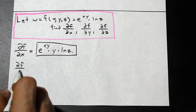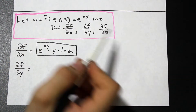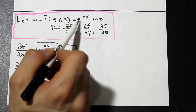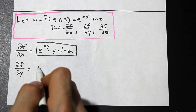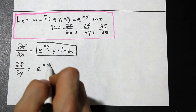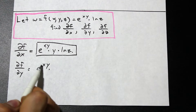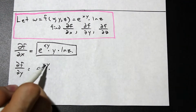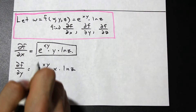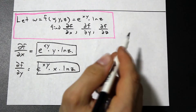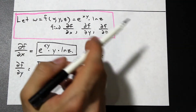Now let's do df/dy. We do exactly the same thing — the only thing that changes is when we apply the chain rule to e to the xy. The derivative of e to the xy is e to the xy times the derivative of xy with respect to y, which is x — y becomes 1 and we're left with x. Then ln(z) is constant and stays. So df/dy equals x times e to the xy times ln(z).